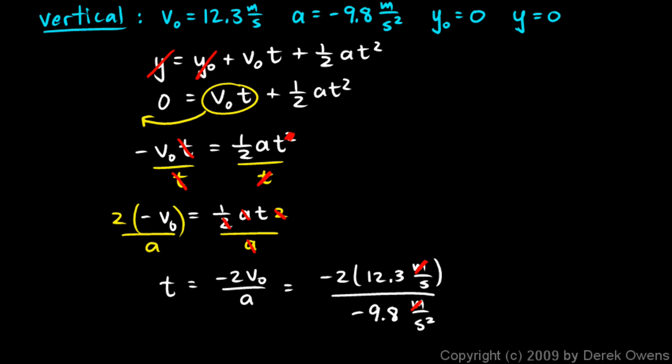Now my negative signs will cancel out. My meters will cancel out. One of my seconds will cancel out. And as always, if you set the problem up carefully, the positive and negative signs and the units should work out. And this works out to 2.51 seconds.